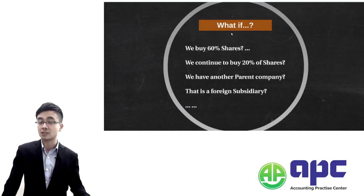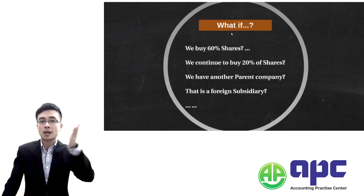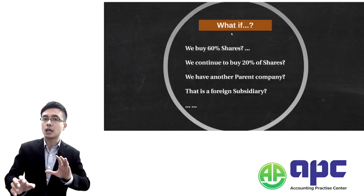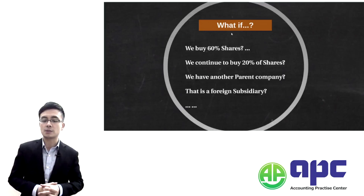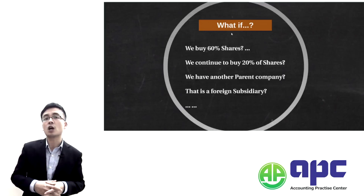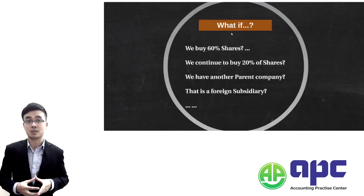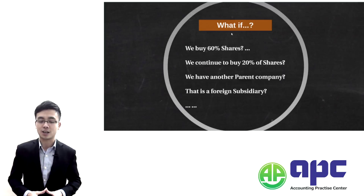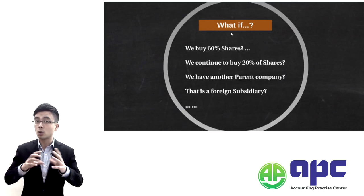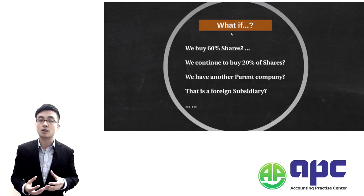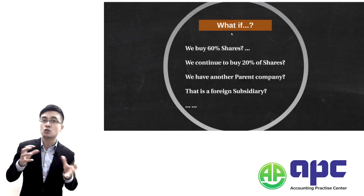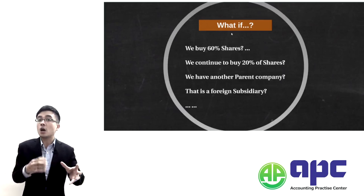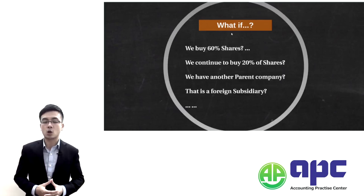Initially we bought 60%, but now we buy another 20%. From the individual financial statements perspective we show this as an investment in equity instrument according to IFRS 9. But from the group's perspective, we have to account for changes in ownership and changes in equity and record them.